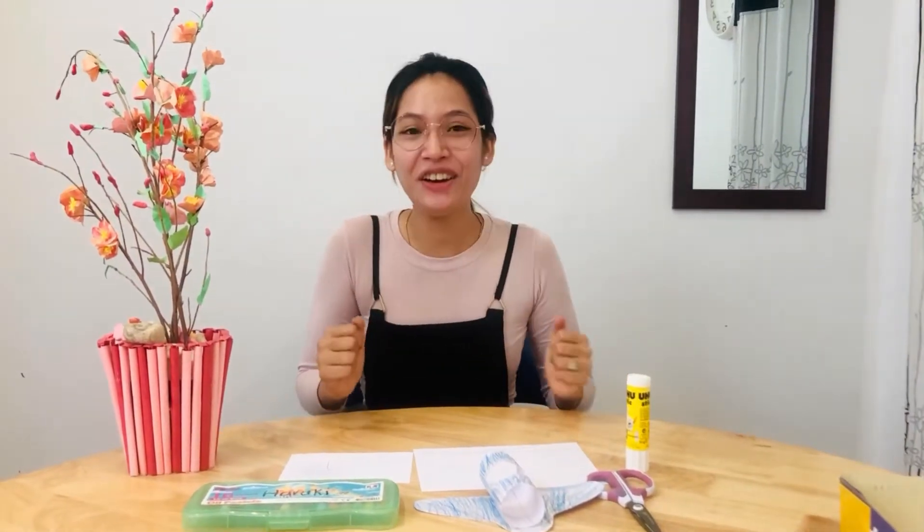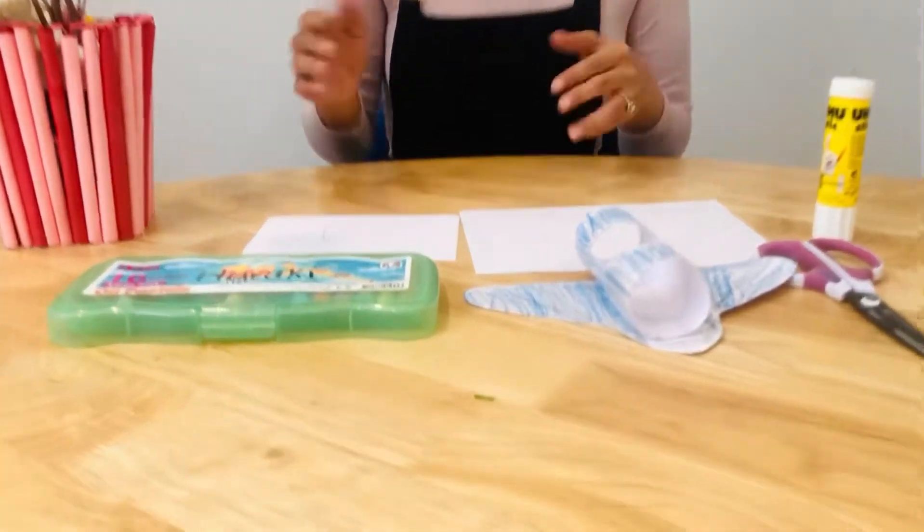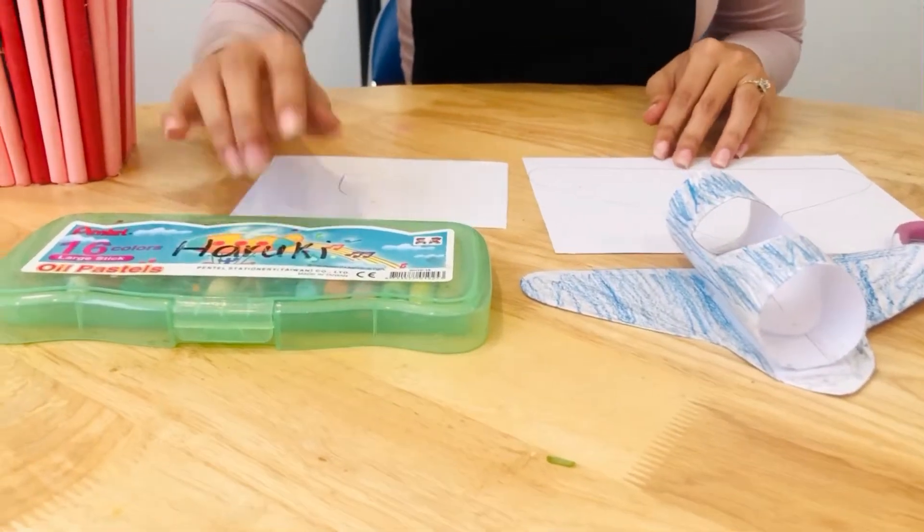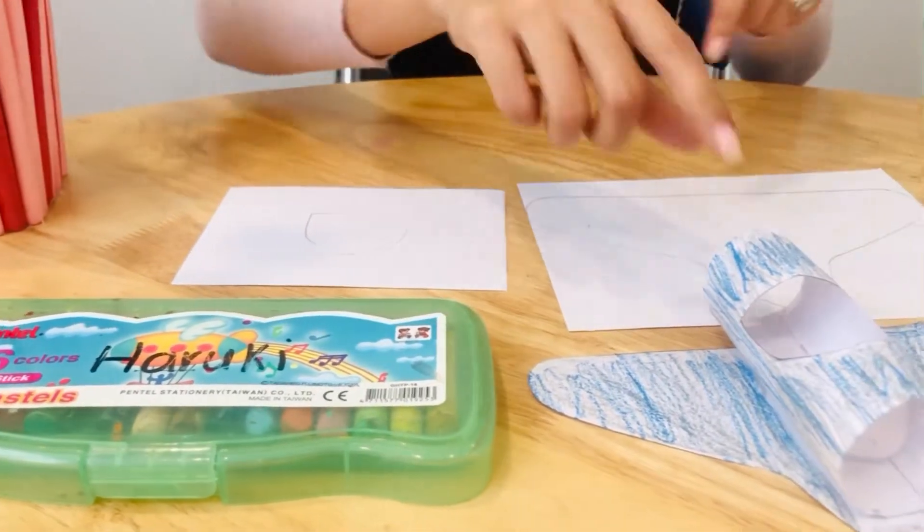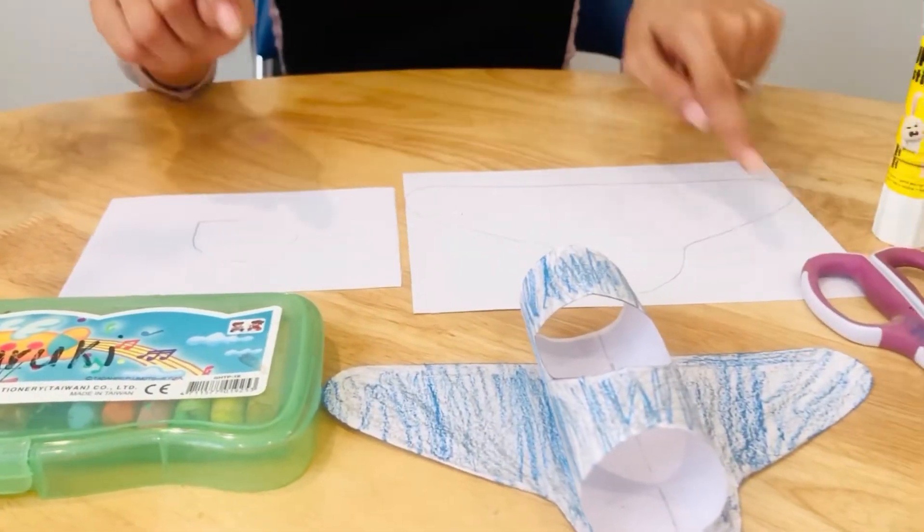Let's take a look at the materials that we need. We got some crayons - sorry Haruki, I borrowed your crayon - we got some paper and some scissors, one scissors and some glue.